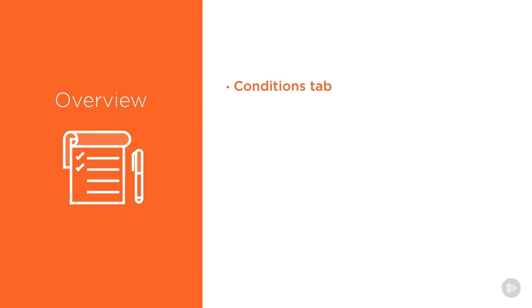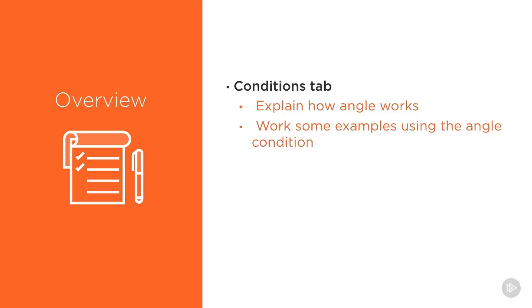To begin with, we're going to focus strictly on the Conditions tab in the Loft feature window. We took a brief look at that in the previous module. I'm going to explain how the angle condition works.